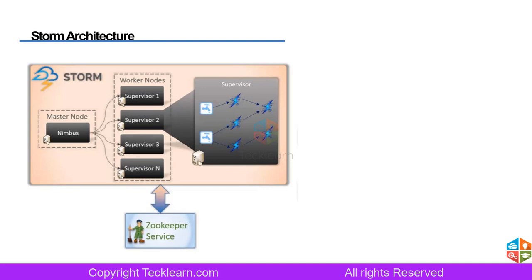Zookeeper is required because if a Supervisor goes down, Nimbus needs to know. All Supervisors keep creating active sessions with Zookeeper — if that session is not there, Zookeeper knows the Supervisor is not up. Nimbus then learns this from Zookeeper using Zookeeper watches. Nimbus puts a watch on Zookeeper for each Supervisor; if one goes down, an alarm is raised by Zookeeper and sent to Nimbus, which can immediately take a decision.